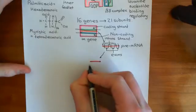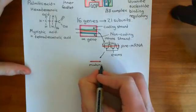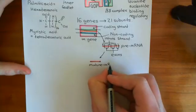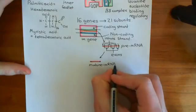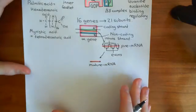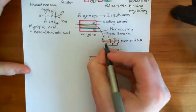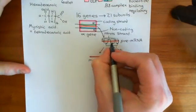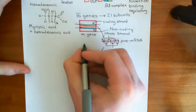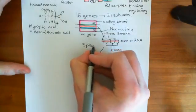What you need to do is take your piece of pre-mRNA, cut out the introns, and sew the exons back together to get a smaller piece of mature mRNA. This mature mRNA can then go through the translation process — go through a ribosome and be turned into a protein. This process of cutting out the introns and sewing the exons back together is known as splicing.